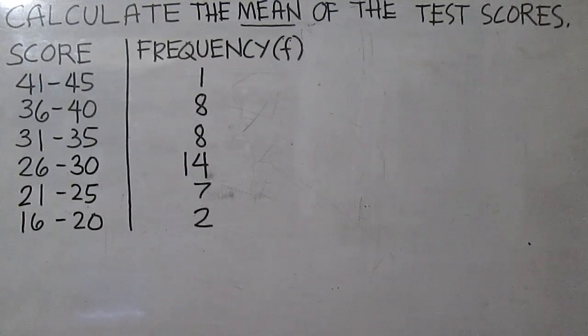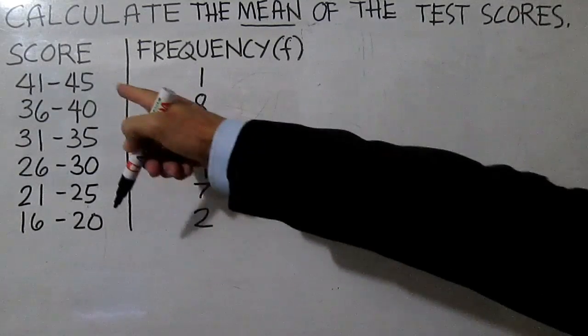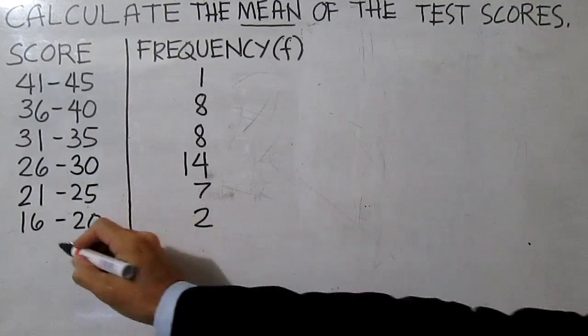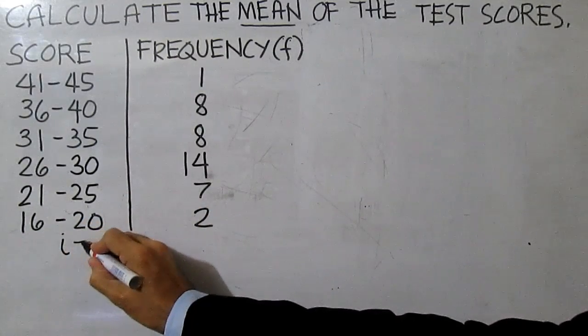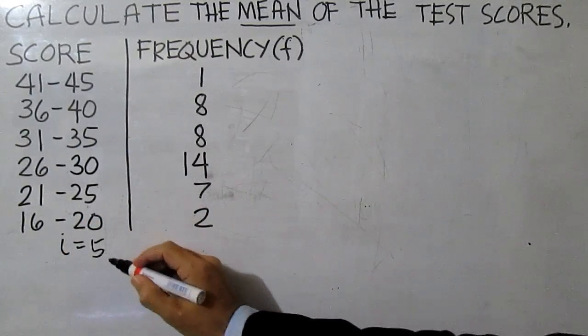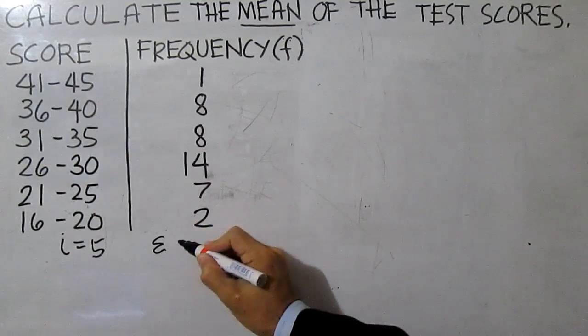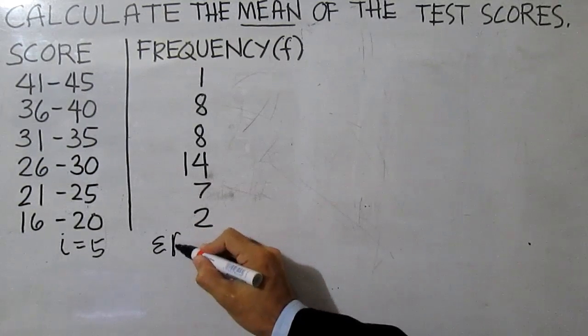Calculate the mean of the test scores. We have six classes and the class width is five. The total frequency is 40.